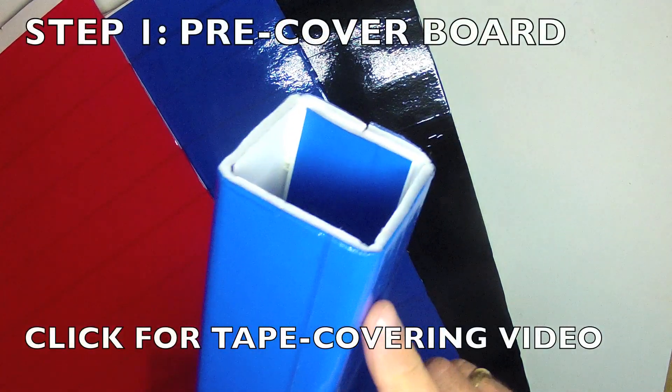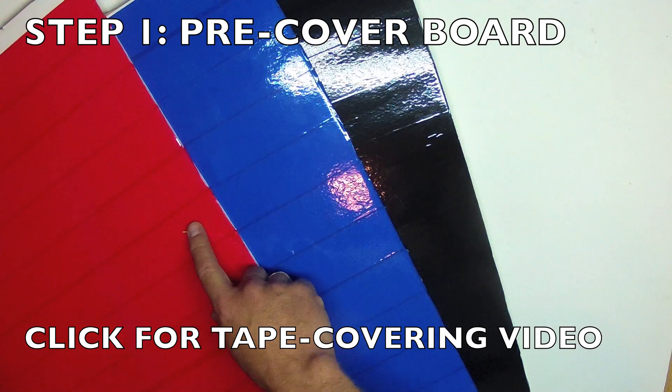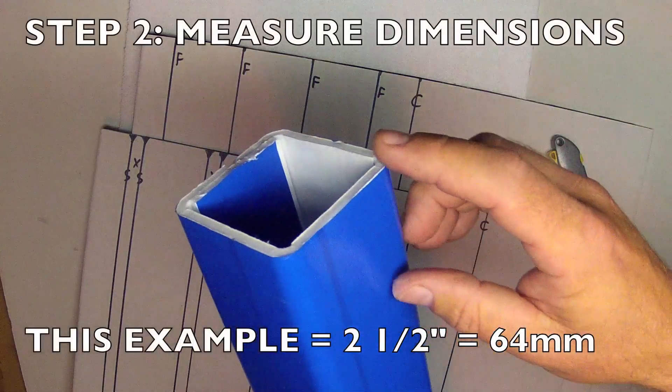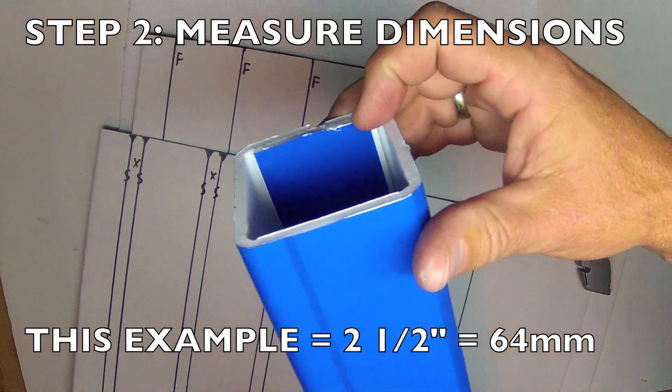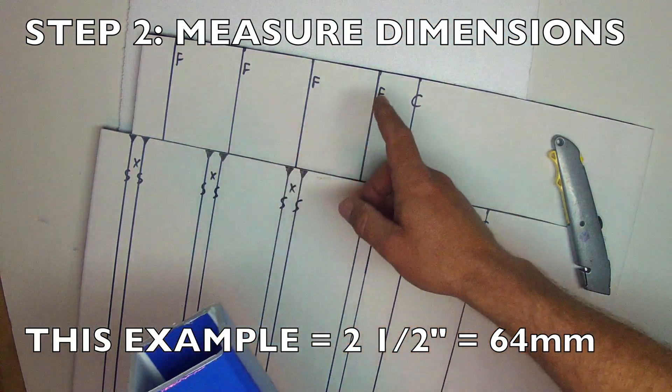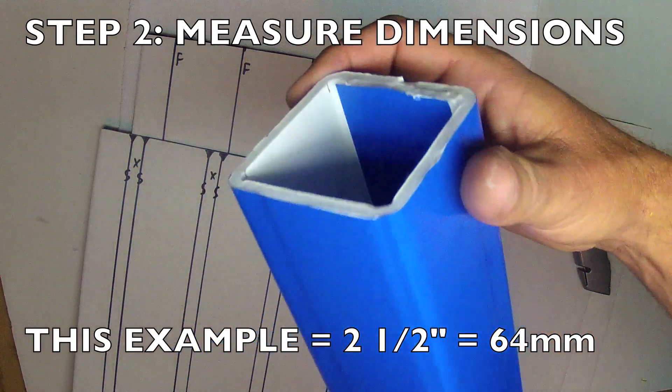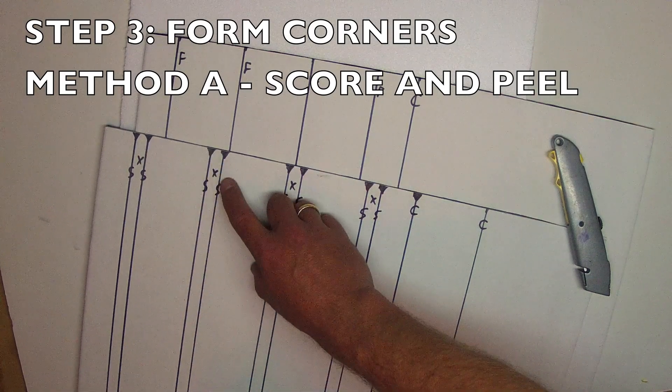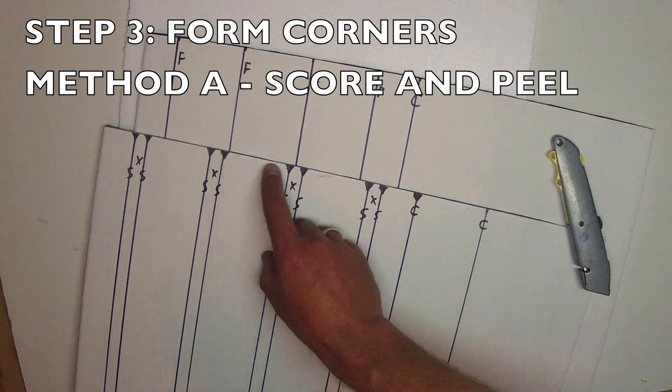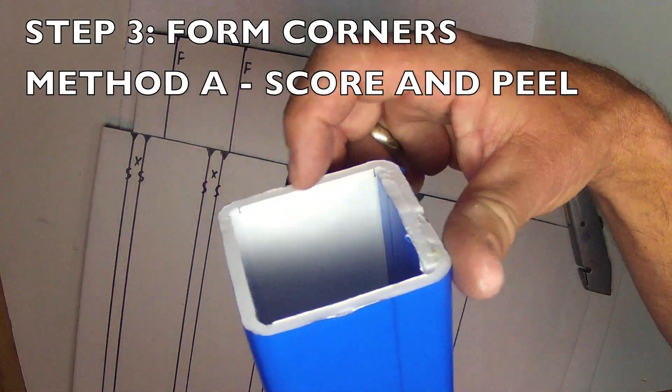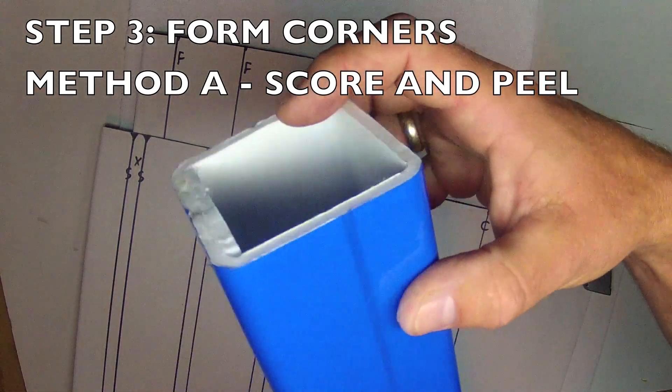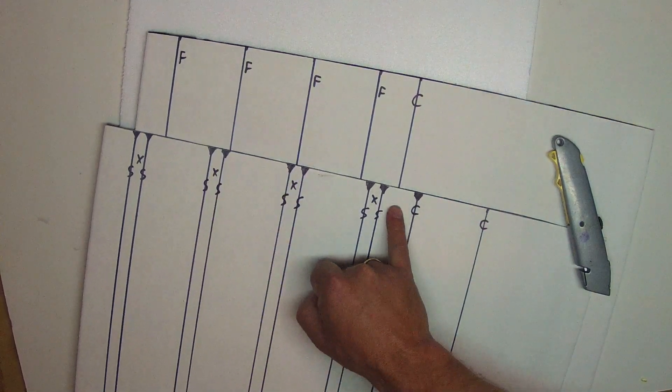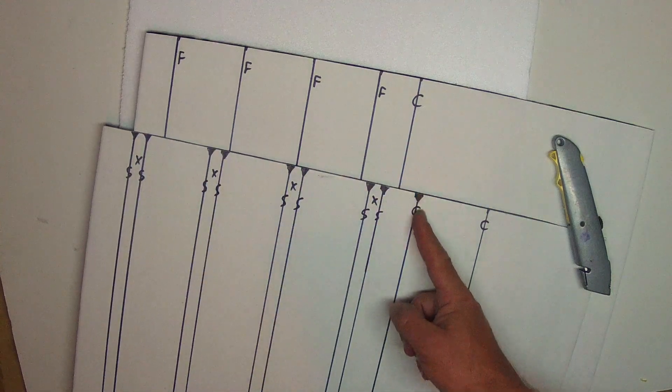The first step in constructing the fuselage tube is to pre-cover your foam board or depron on one side with the packing tape. Step two is to decide the dimensions of your fuselage tube and then translate those dimensions onto your foam board or depron in preparation for folding the corners. The first method is a score and peel technique that works well with ready board and other foam boards, where this dimension determines the inside diameter of the fuselage tube. Add a ratio of one side, one side, one side, with one half and one half at the corners, this piece being cut off.